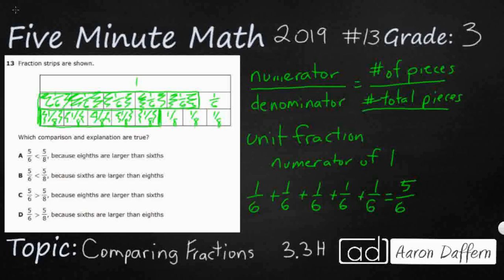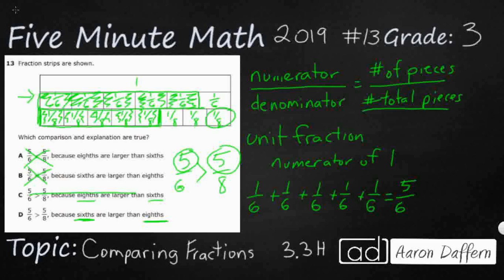Now we need to compare these two fractions. We've got 5/8 and we've got 5/6. Which one looks bigger? It looks like 5/6 is bigger, so 5/6 is greater than 5/8. Even without a picture, we could tell that because we have the same numerator — the smaller the denominator, the larger the piece. As the denominator gets larger, each piece gets smaller. Look how small those eighths are compared to the sixths. So 5/6 is greater than 5/8 because sixths are larger than eighths.